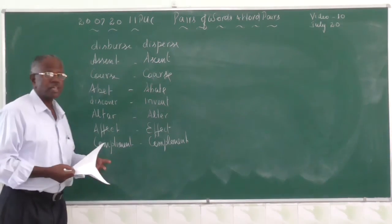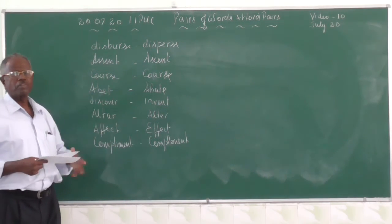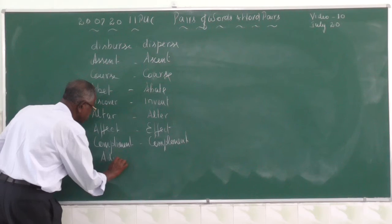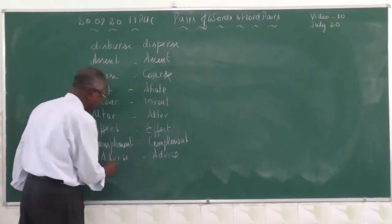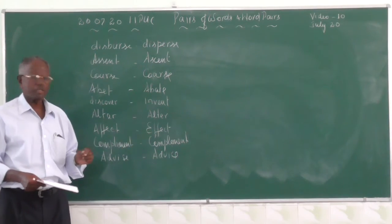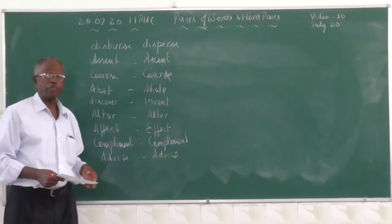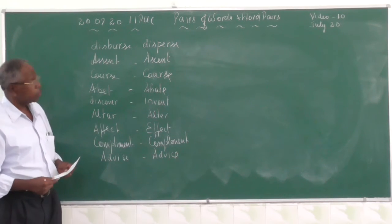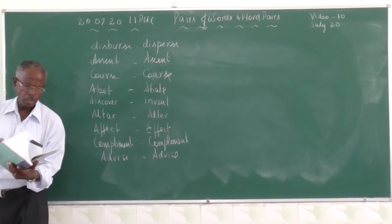So I have given you some examples and there are many more groups of pairs of words. For example, 'advise' and 'advice' — the same word used differently in parts of speech. 'Advise' is a verb and 'advice' is a noun. Parents advise their children. Children must follow the advice of parents. Now let us see what is given in your textbook.